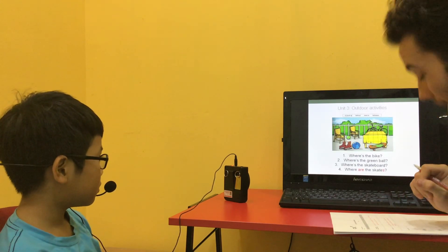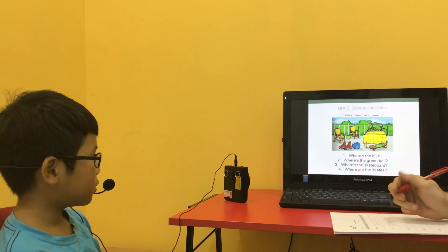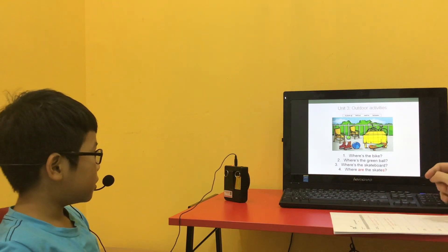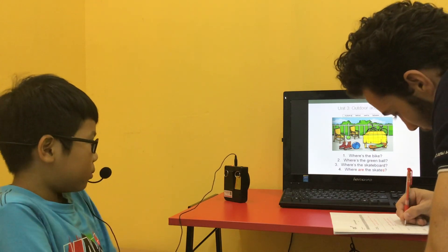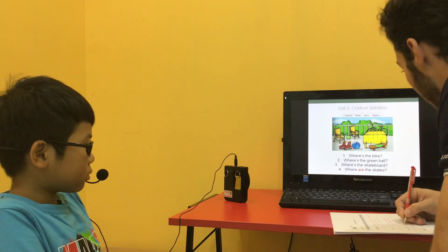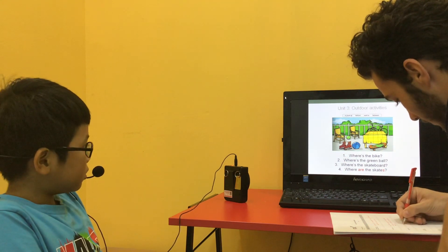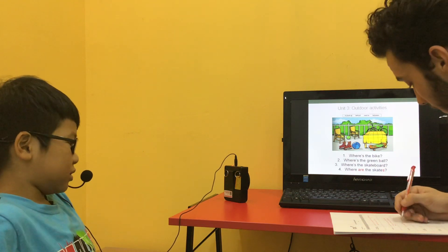We have our prepositions. We have prepositions in front of, behind, next to, between. So example, where is the bike? The bike is behind the table. Where is the green ball? Okay, where is the green ball? Between the trees. Between the chairs. Between the chairs.